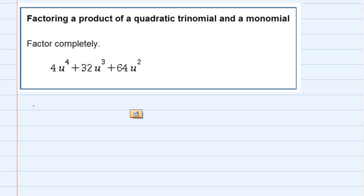So identifying it, the numbers all have a 4 as a common factor, and then the variables all have at least 2 u's or u squared. So we should factor that out first.